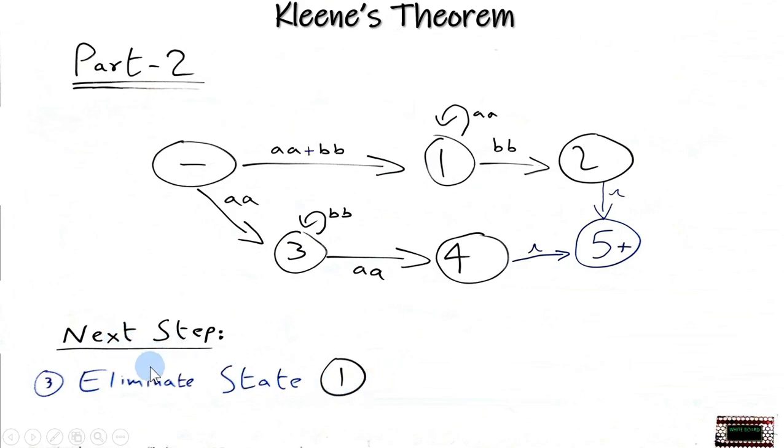Now in the next step we will eliminate state 1. Then this expression will come inside the brackets and this expression will also come inside the brackets. But what happens to this loop expression? This loop symbol means that there can be any number of AA's. So how can we change this? Let's see.